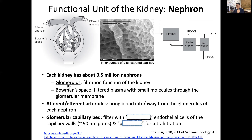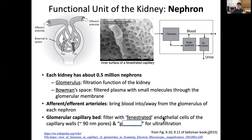The glomerulus is where the filtration function happens in the kidney. The Bowman's space contains filtered plasma with small molecules that have passed through the glomerular membrane. The afferent and efferent arterioles bring blood into and away from the glomerulus. The glomerular capillary bed filters using fenestrated endothelial cells with holes in the capillary wall, and special cells called podocytes on the outside perform ultrafiltration.